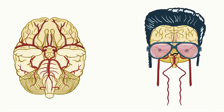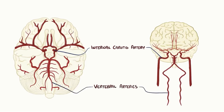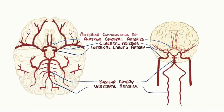The brain receives blood from the left and right internal carotid arteries, as well as the left and right vertebral arteries, which come together to form the basilar artery. The internal carotid arteries turn into the left and right middle cerebral arteries, which serve the lateral portions of the frontal, parietal, and temporal lobes of the brain. Each of the internal carotid arteries also gives off branches called the anterior cerebral arteries, which serve the medial portion of the frontal and parietal lobes.